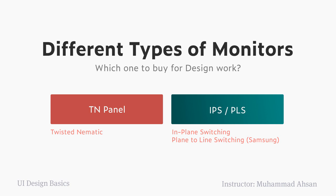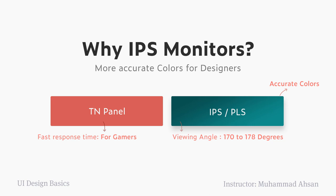Whenever you are looking for a monitor, try to search for what its panel type is — whether it's a TN panel or IPS panel. For designers, I will always recommend an IPS monitor for two reasons. The first reason is accurate color space. If you are a designer, you might use color profiles like sRGB, which is standard for designing color schemes and apps. IPS monitors represent colors more accurately. The second reason is their viewing angle — 170 to 178 degrees — so colors stay consistent when viewed from the left, right, up, or down.